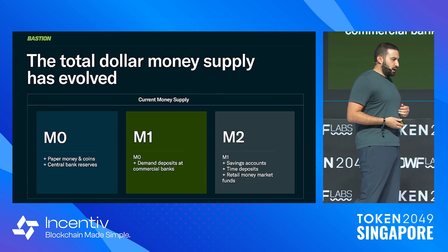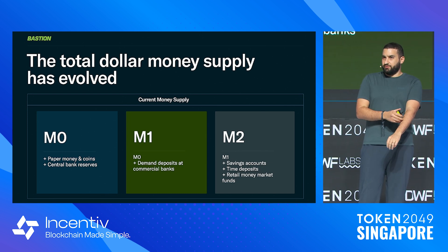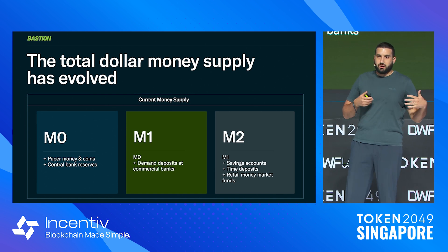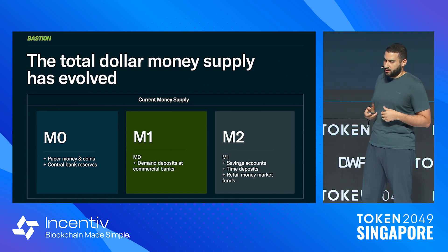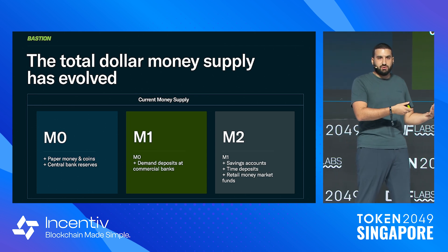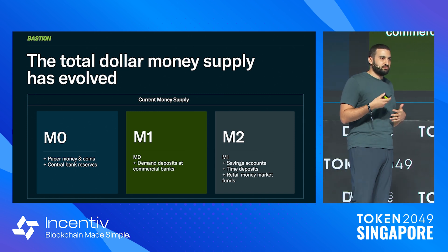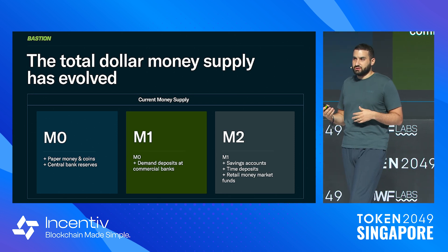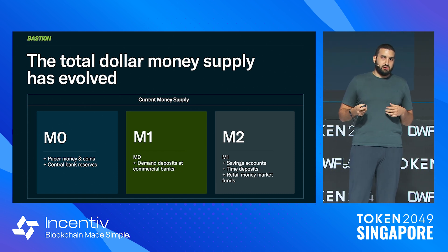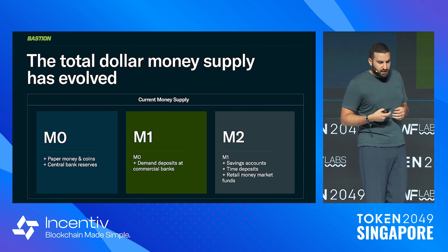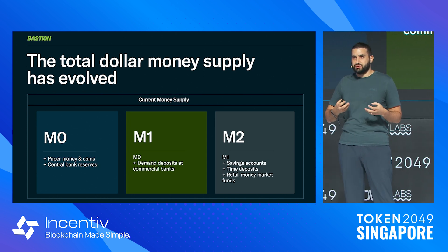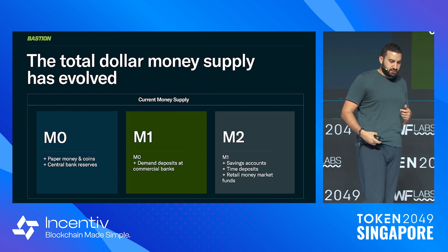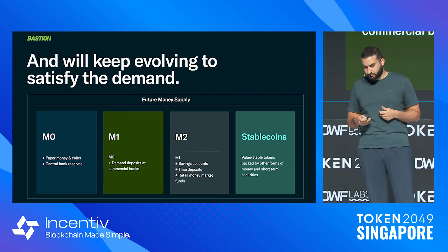Let's set the baseline on the evolution of money. Money supply has really evolved over time, starting with paper money and coins held by banking institutions. That evolved into M0 — the most liquid form of money — then evolved towards M1, sometimes referred to as narrow money, which is a little less liquid but still pretty liquid, including deposits held at commercial banks, not just central banks. And M2 is an expansion around that, including less liquid money such as savings accounts, short-term deposits, and retail money market funds.